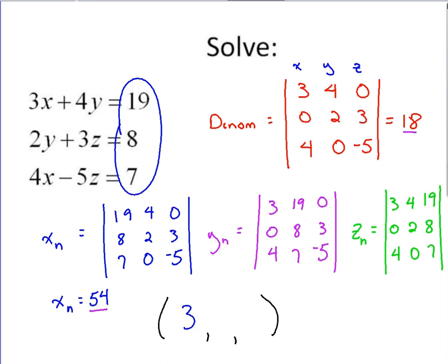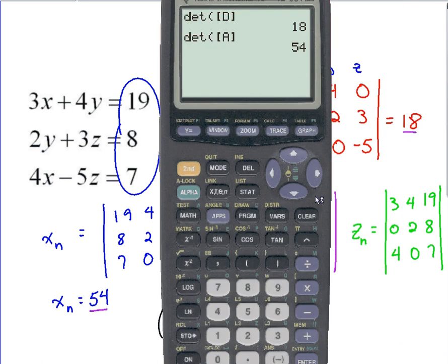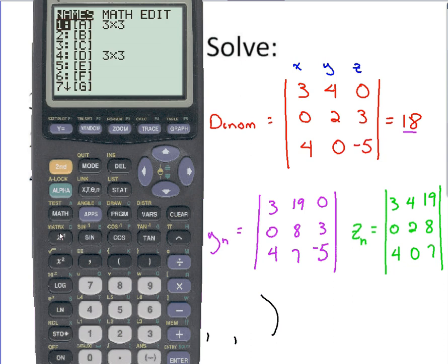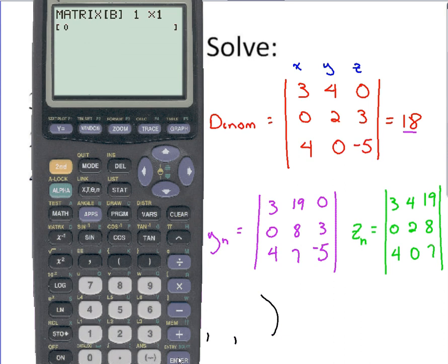Okay, now let's set up for y. Move this out of the way so I can see the matrix for the numerator portion of the y coordinate. If I go back now to the matrix menu, I've got to edit a new matrix. And just to distinguish between the ones I've already set up, let's use B this time. So scroll down to B, hit Enter. We want a 3 by 3. Top row for y sub n is 3, 19, and 0. Second row is 0, 8, and 3. Third row, 4, 7, and negative 5.